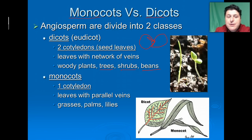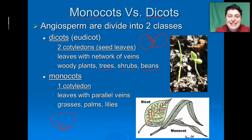Monocots only have one seed coat — they don't open up like a book, they just have their embryo in a single seed coat. The leaves of monocots have parallel veins, like our grasses or lilies.